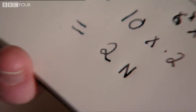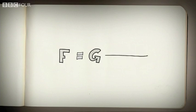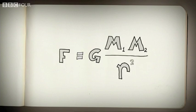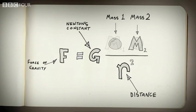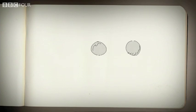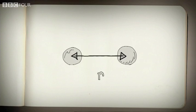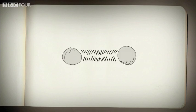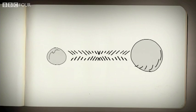The number of newtons measures the force of gravity acting on the apple. It's a complicated equation, but I'm beginning to understand the key parts. The force depends on the mass of the two objects and the distance between them. The bigger the objects, the bigger the force. And the further apart they are, the weaker the force.